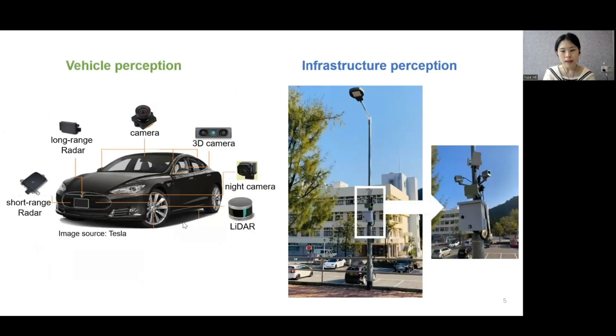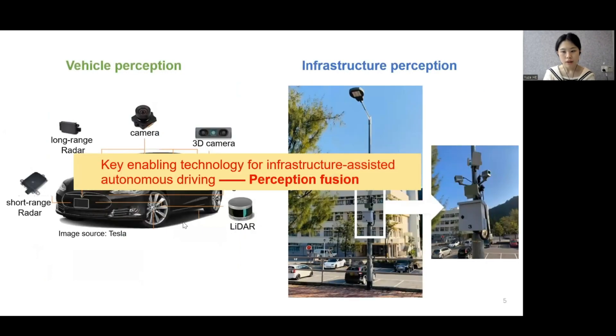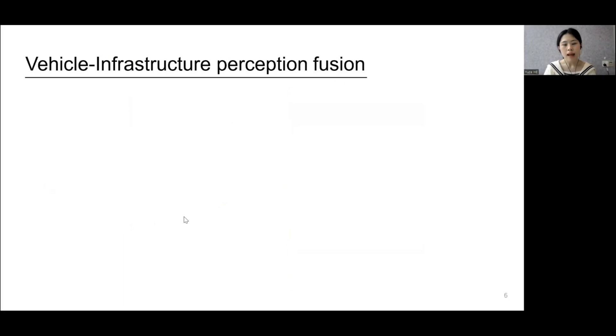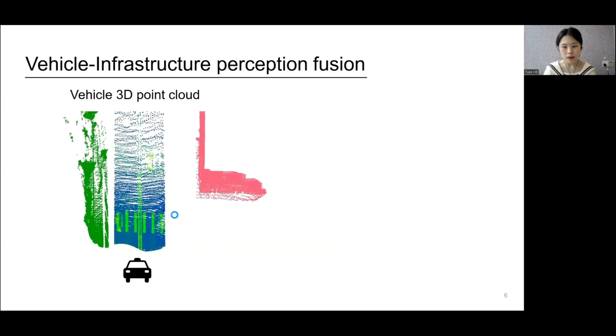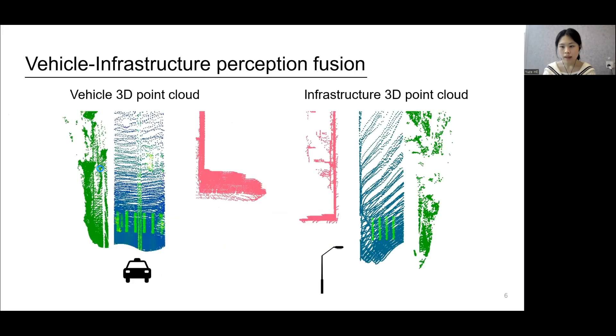A key enabling technology for such an infrastructure-assisted autonomous driving approach is the perception fusion between vehicles and infrastructures. In this work, we study the problem of aligning the 3D point clouds from vehicle and infrastructure.